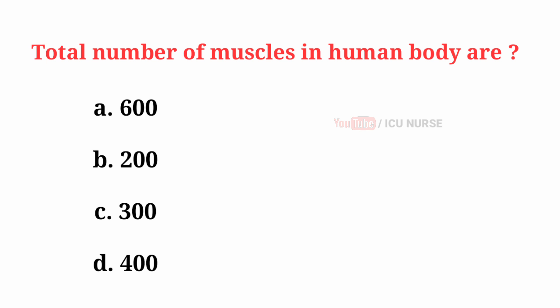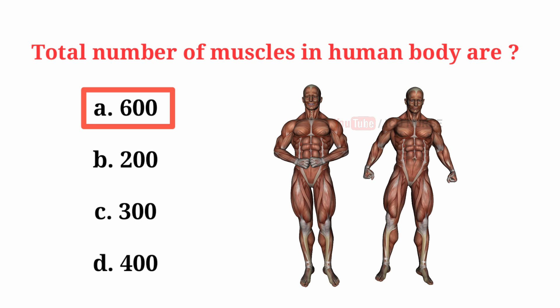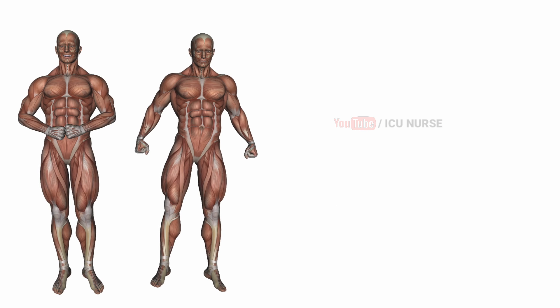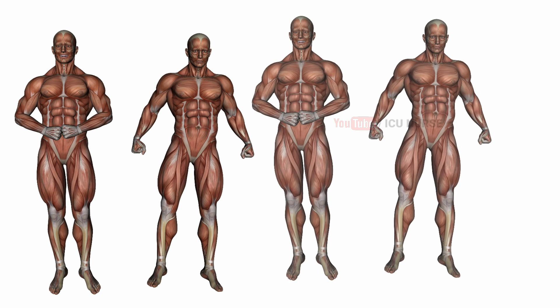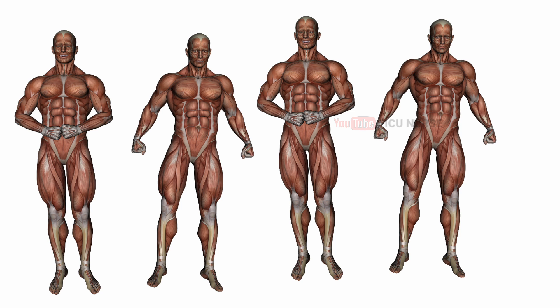Total number of muscles in the human body — the correct answer is A: 600 muscles. There are over 600 skeletal muscles within the typical human body.